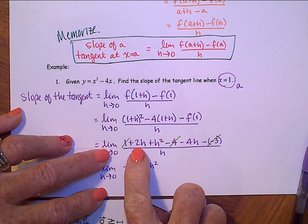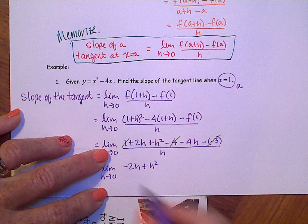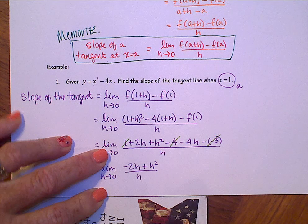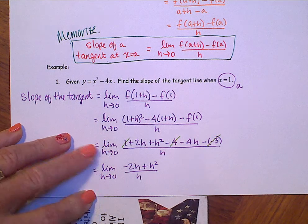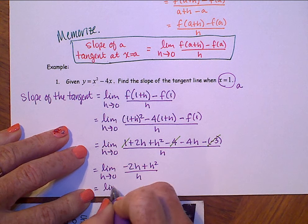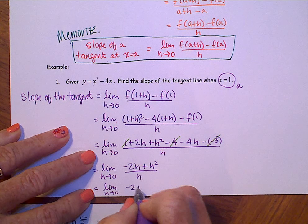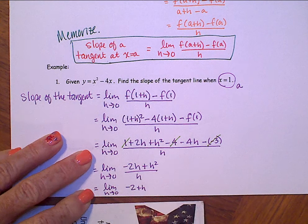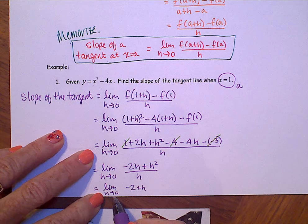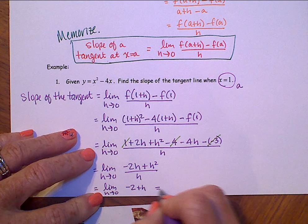This 2h and that minus 4h is a negative 2h and plus an h squared. Let me go back and line up those constants. That helps. So we have a 2h minus 4h. There's a negative 2h plus an h squared. All over h. Divide an h out of everything. And that will give us a negative 2 plus an h. Now we take the limit as h approaches 0. And we get negative 2.